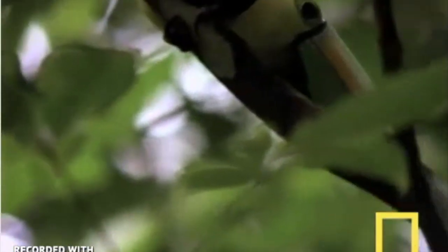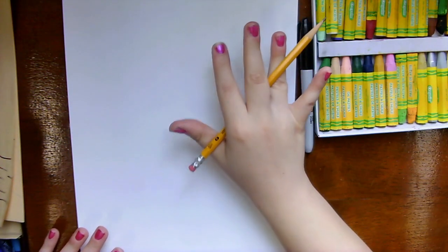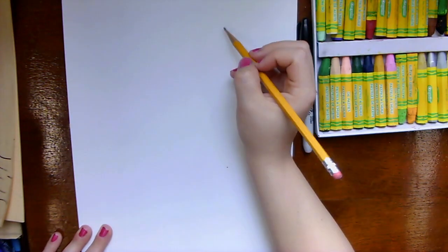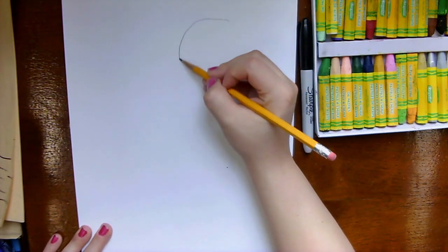Follow along with me to draw this amazing rainforest bird. To start off I'm going to be using some guidelines and shapes to lay down my toucan. To do that I'm going to start off with a pencil and I'm going to go to the right side of my page at the top.